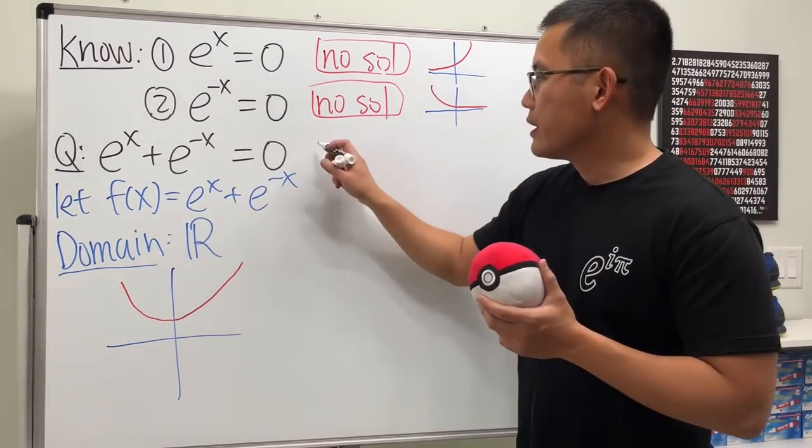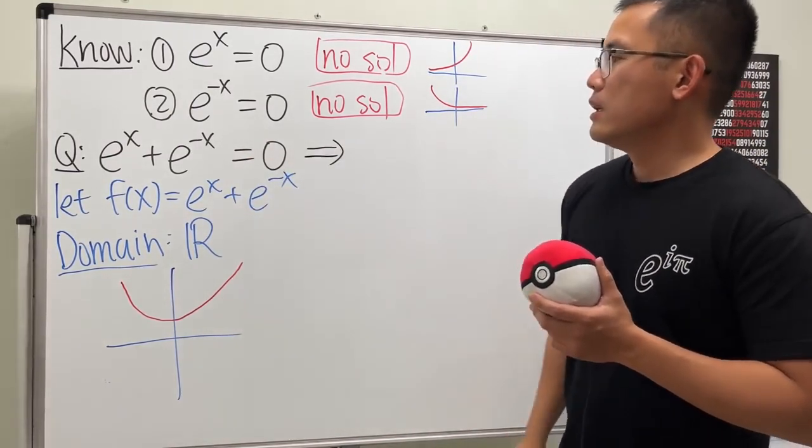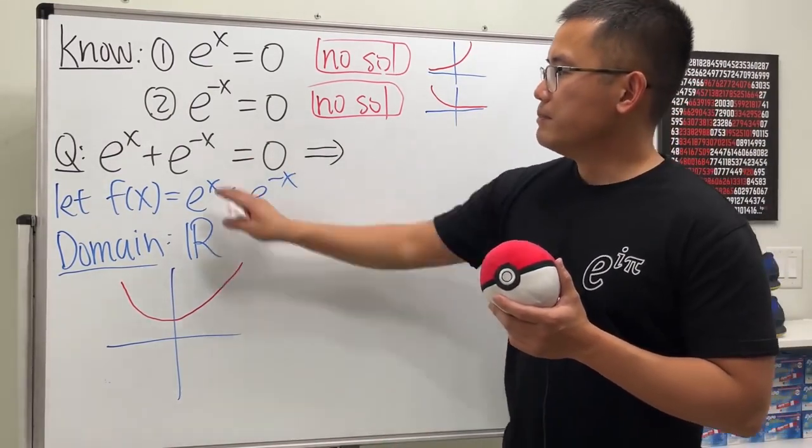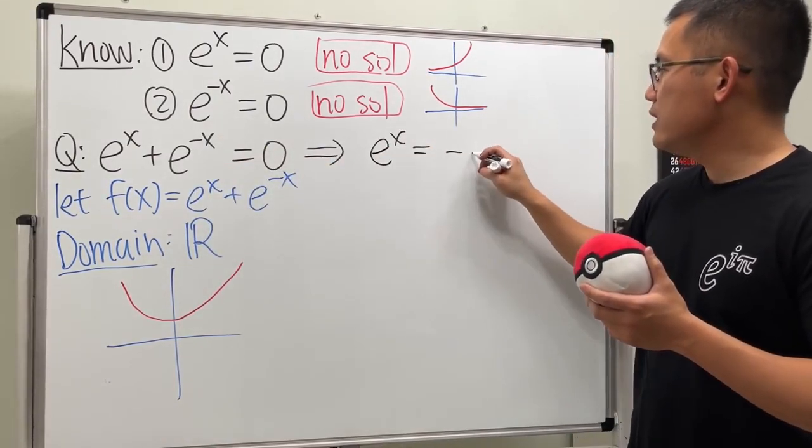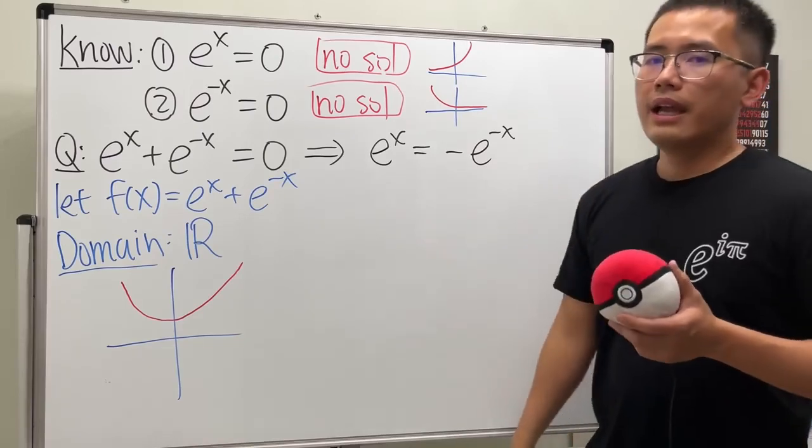Here's how we can do it. Let's move this to the other side so we have e^x and that's equal to negative e^(-x).